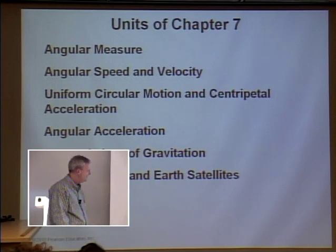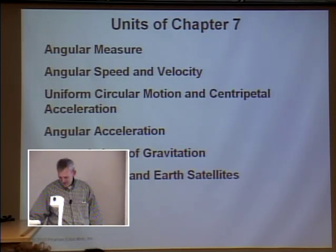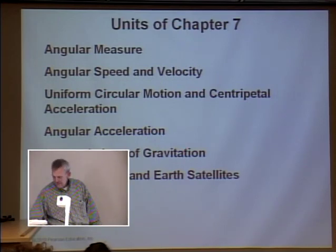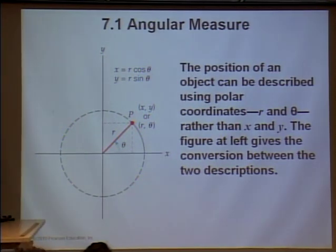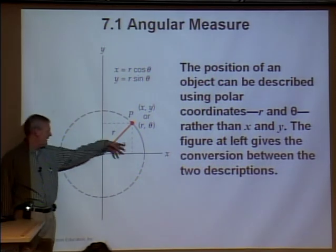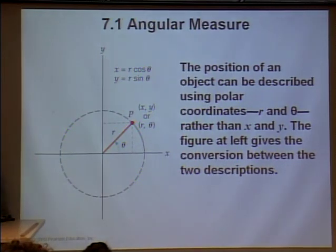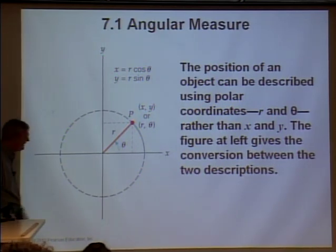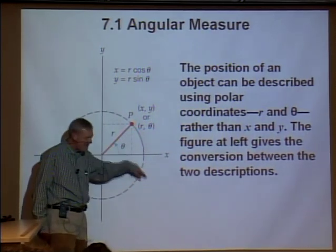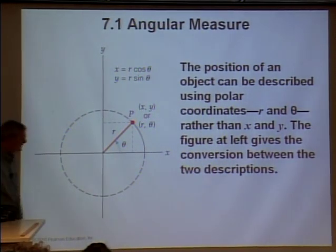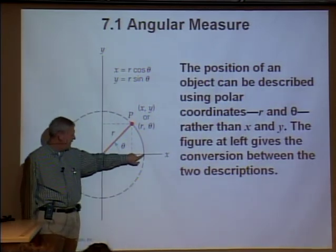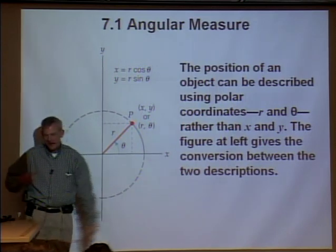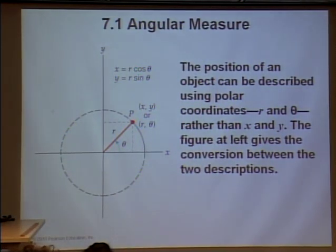Here's the math behind this — it's just the unit circle. The x coordinate is r cosine theta and the y coordinate is r sine theta. Now I want to find how far it is just along the arc. If I go around the full circle, the distance is the circumference: two pi times r. Two pi is the number of radians you go around — 360 degrees equals two pi radians.